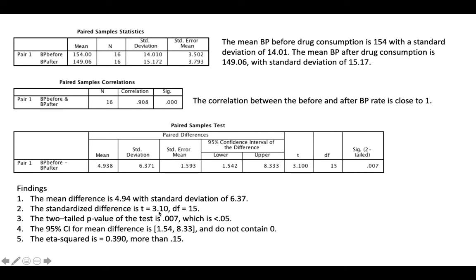For the findings: the mean difference is 4.94 with a standard deviation of 6.37. The standardized difference — your T — is 3.10 with a DF of 15. Our N is 16, so we have 32 observations because of before and after, but only 16 respondents. The two-tail p-value of the test is 0.007 — just like James Bond — which is less than 0.05.